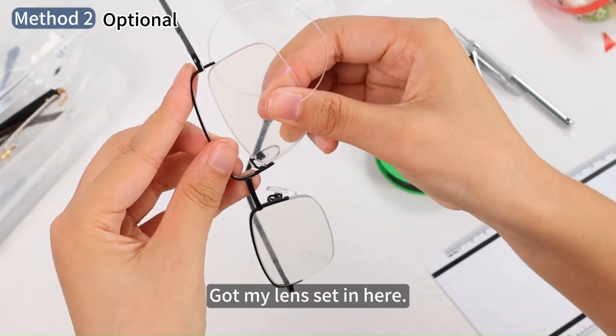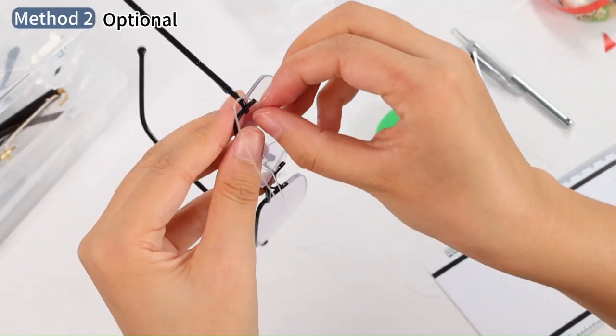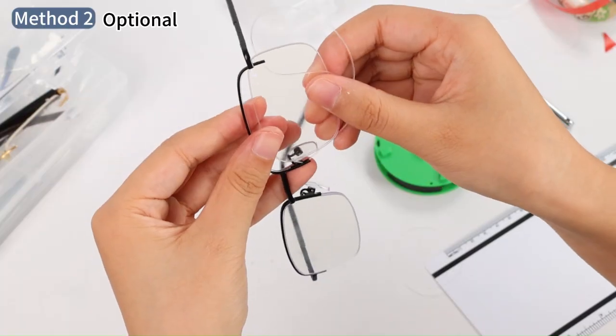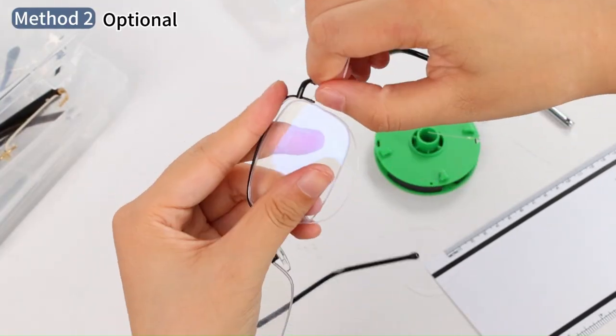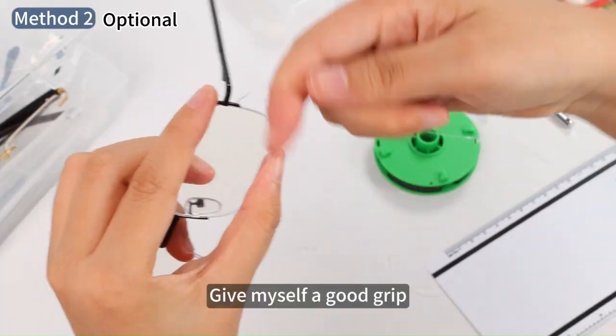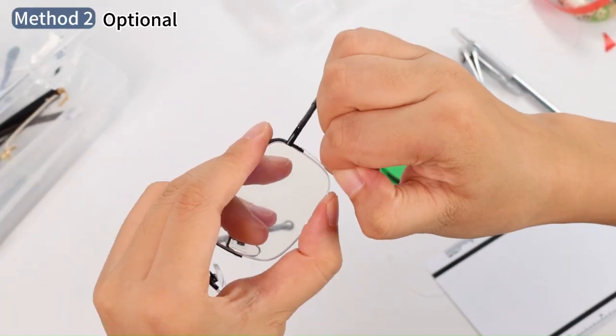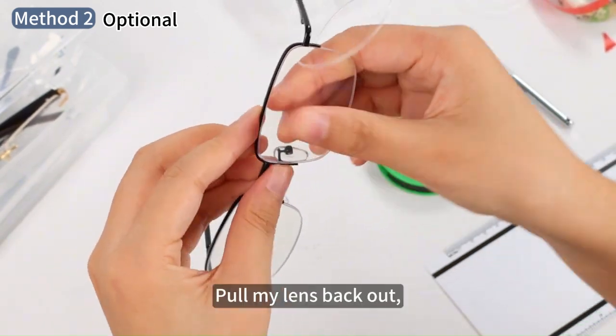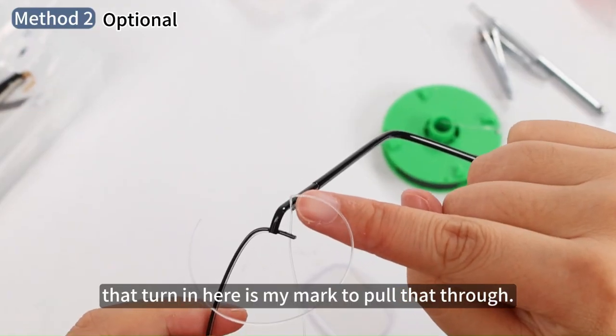Got my lens set in here. Give myself a good grip. Pull the extra string tight and tug it a few times. Pull my lens back out. That turn in here is my mark to pull that through.